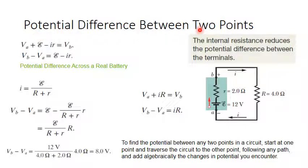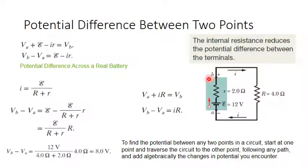Now it is required to calculate the potential difference between two points. Assume we have a simple circuit: a real EMF source with an internal resistance r connected to a resistor R, and it is required to find the potential difference between B and A. To calculate this, the rule is: start at one point — regardless which — and traverse the circuit to the other point, going with the current.